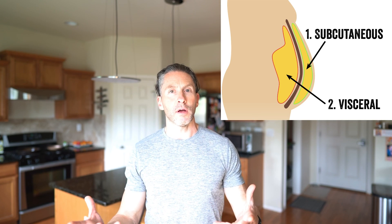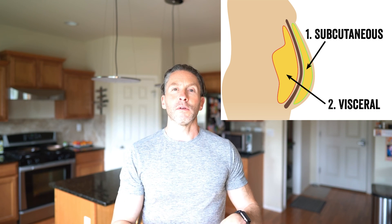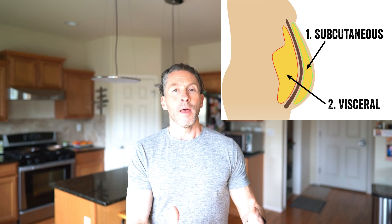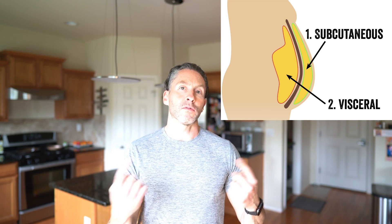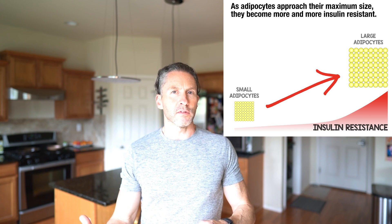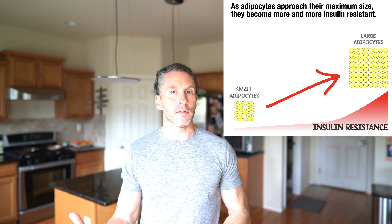Fat is initially stored in your subcutaneous adipocytes, where it's very harmless and is designed to be stored. As you approach the maximum diameter of those fat cells, you signal the growth of new fat cells if your genetics allow. But when you've made all the new fat cells you can and they're all approaching maximum size, you have to start storing fat ectopically — that's visceral abdominal fat — and unfortunately this signals the beginning of insulin resistance.